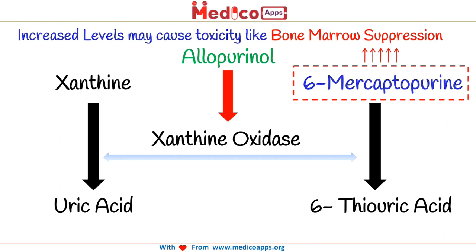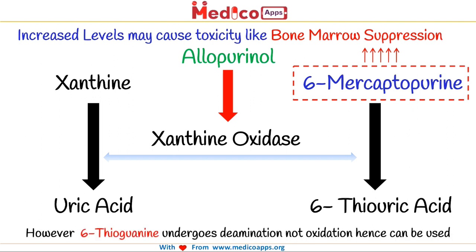An important point here is that 6-thioguanine, which has a similar anti-cancer profile as 6-mercaptopurine, undergoes deamination and not oxidation like 6-mercaptopurine, and hence it can be used along with allopurinol.